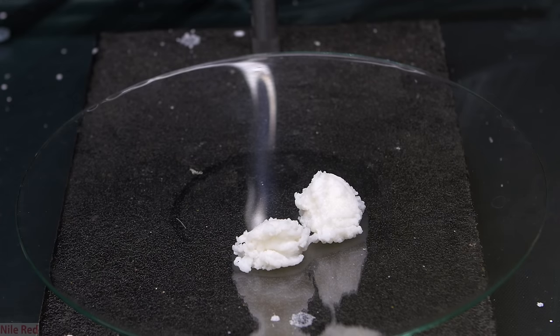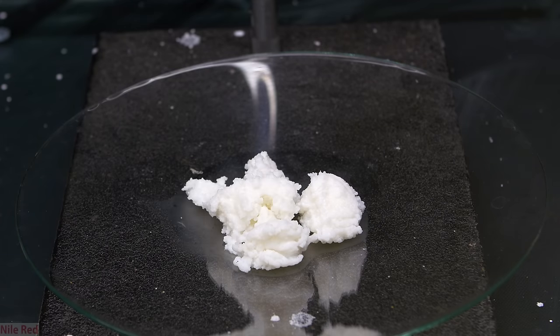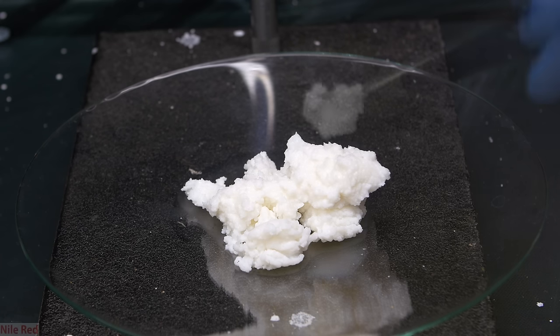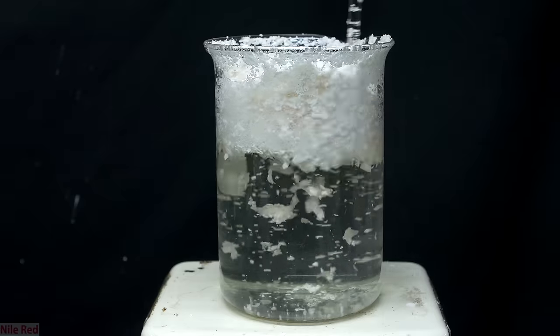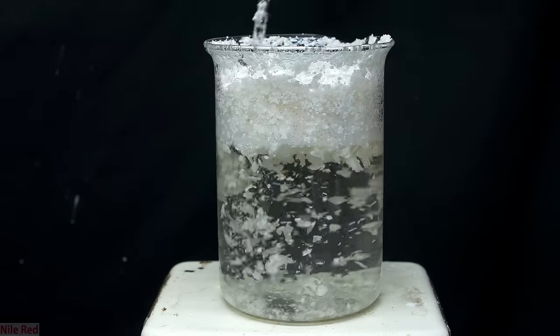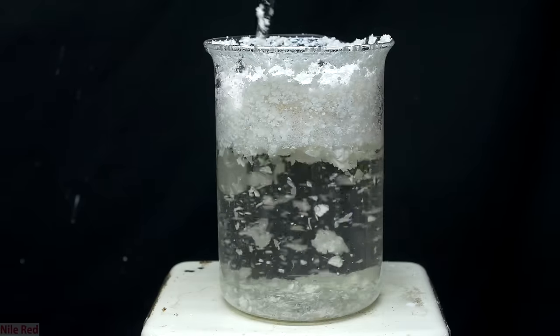To make the calcium acetate it's actually really simple, and all we need to do is mix some form of calcium carbonate with vinegar. There are a lot of different sources of calcium carbonate, but in this video I'm going to be using eggshells.